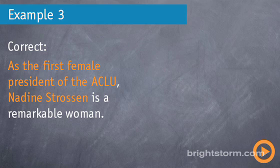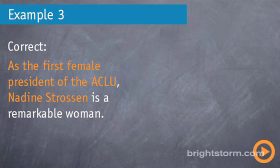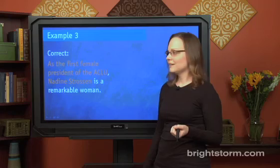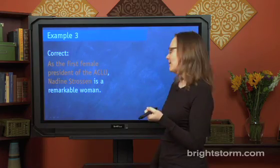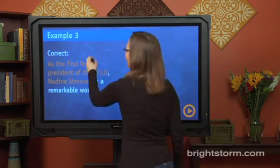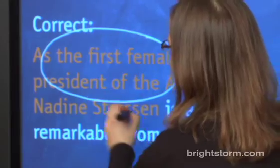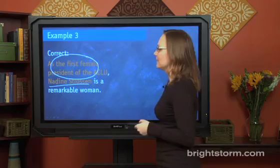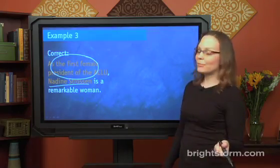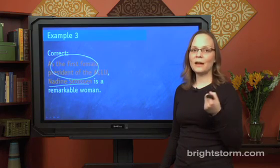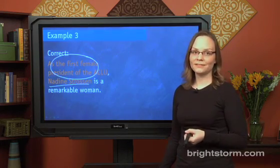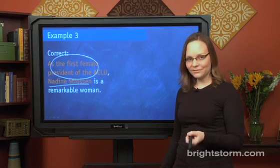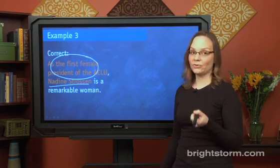Third example: 'As the first female president of the ACLU, Nadine Strawson is a remarkable woman.' The modifier is 'as the first female president of the ACLU,' and the noun it is describing is Nadine Strawson — and that's correct, that is Nadine Strawson.